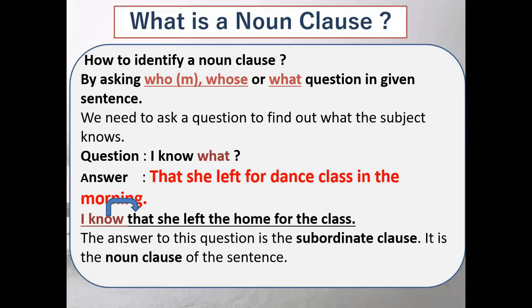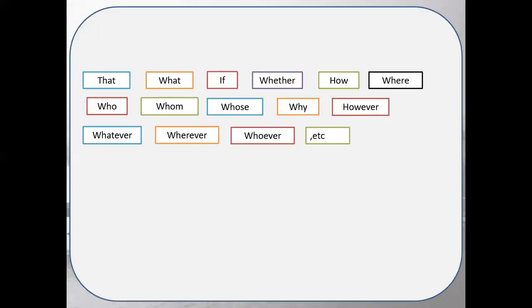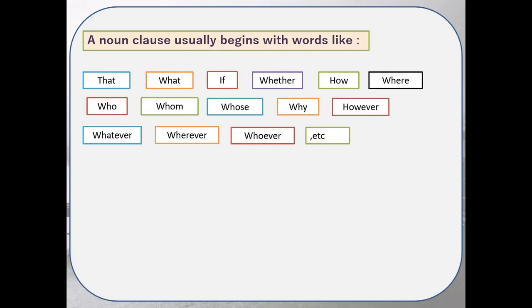As we see, it is taking the same position as a noun — and that position is the object position. A noun clause begins with words such as: that, what, whether, how, where, who, whom, why, however, whatever, whoever, etc. These are a few words from which a noun clause basically begins.